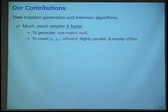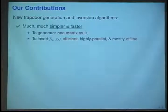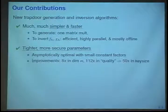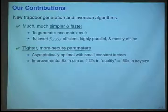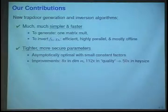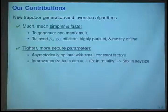We give also tighter and more secure parameters, so they're asymptotically optimal and the constants are small. Concrete example improvements you can expect are eight times, eightfold in the dimension M, 112-fold in the quality, which implies about 50-fold improvement in the key sizes.